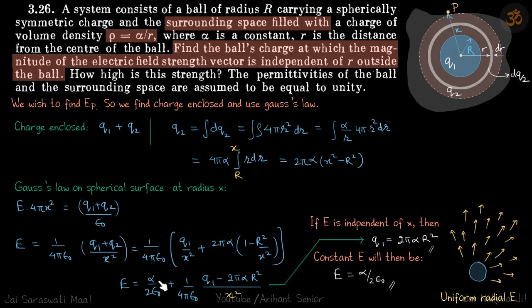You got eventually electric field as constant plus 1 by 4π ε₀ times q1 minus 2π α R² by x².